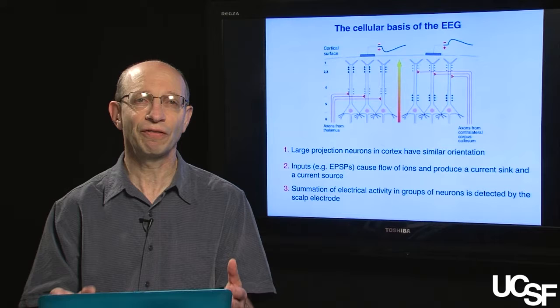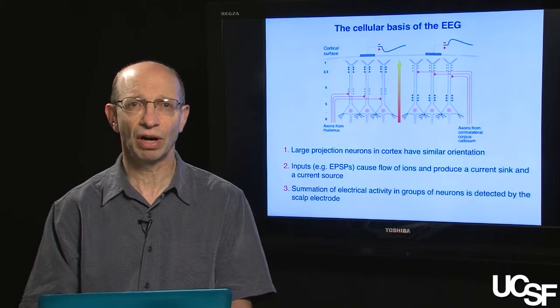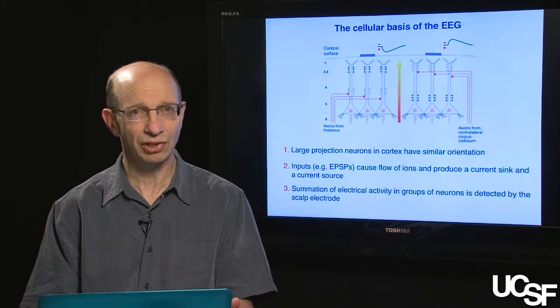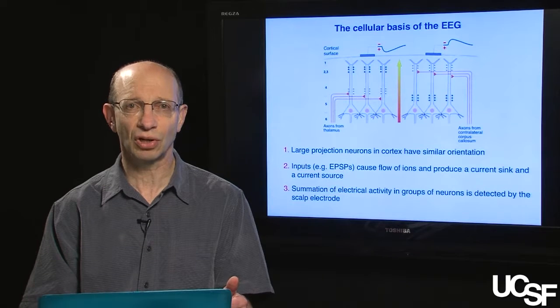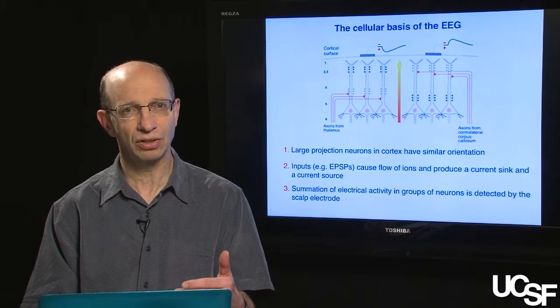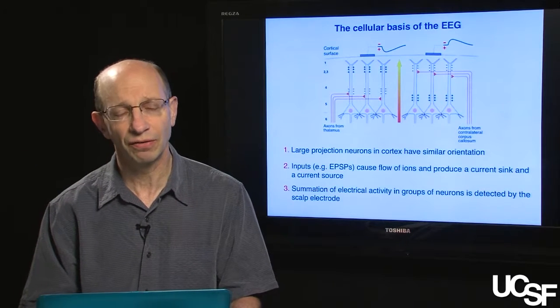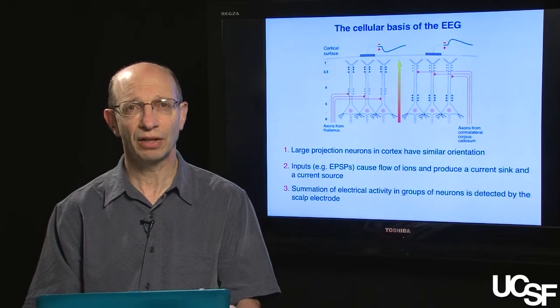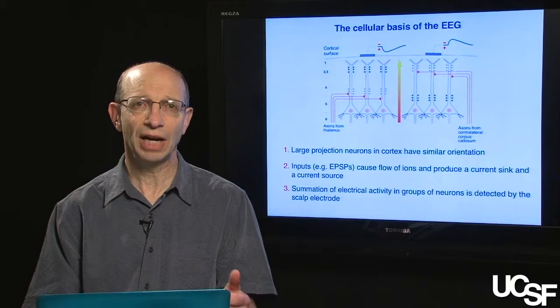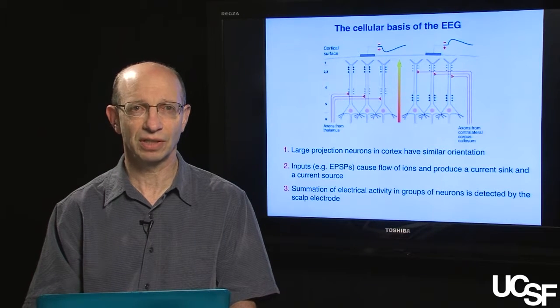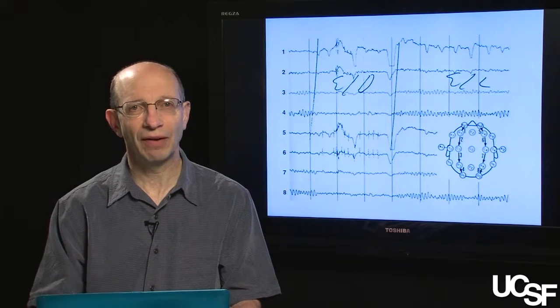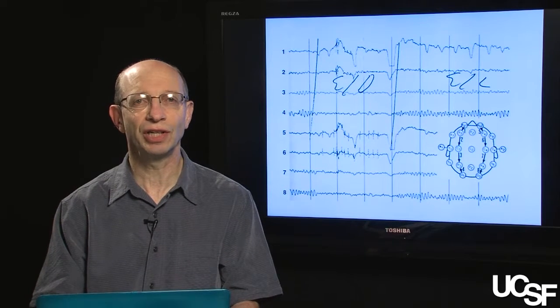So there you have it. It's the fact that the large projection neurons in the cortex have a similar orientation, that the inputs cause this flow of ions, this sink and source, and it's the summation of large numbers of these inputs that create a detectable change in voltage at the surface of the scalp. Now that we have an understanding of the cellular basis of the EEG, let's take a look at a real EEG.